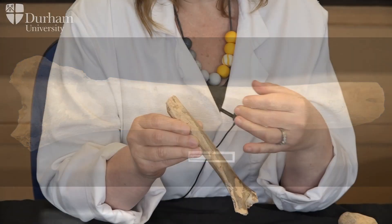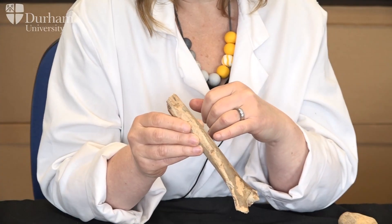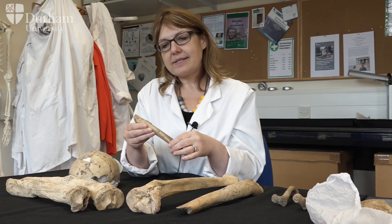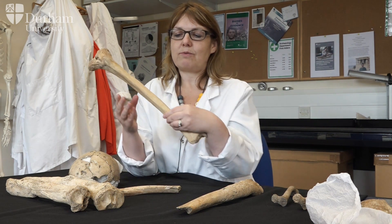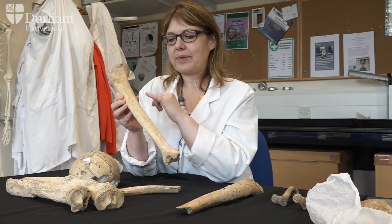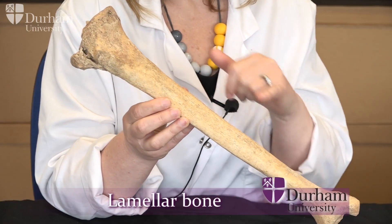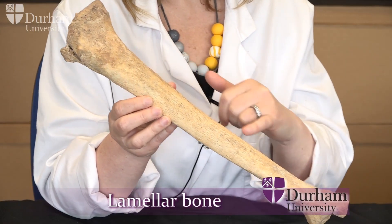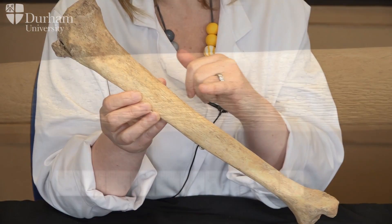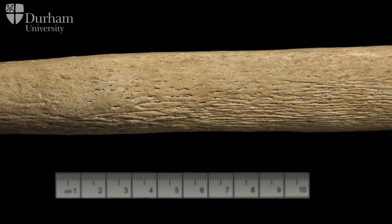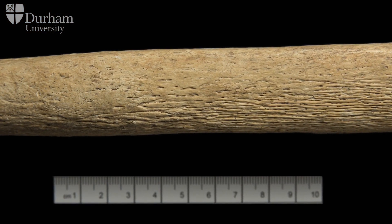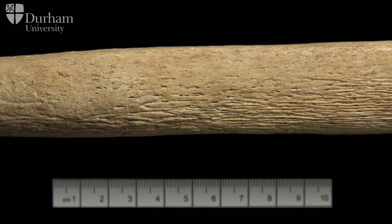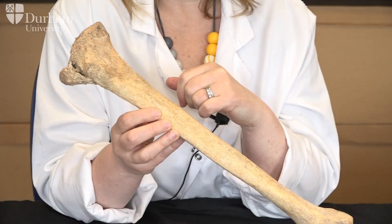When we see this woven bone we know that the disease process or inflammation was active at the time of death. As the bone starts to heal, this woven bone becomes remodeled and forms what we call lamellar bone. You can see here this striated bone on the surface - it's the same color as normal bone and a similar texture, and this shows us that the bone is healing at the time of death.